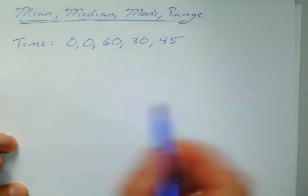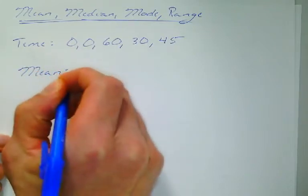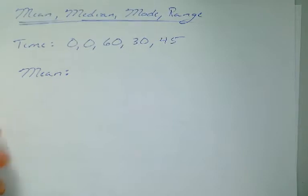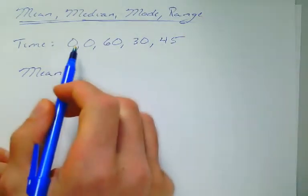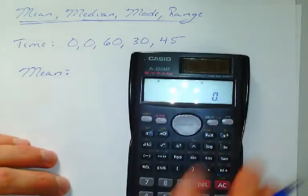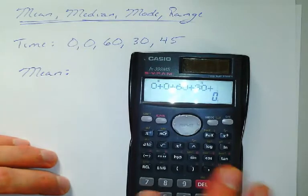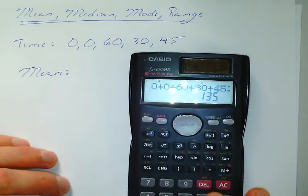Alright, so first thing we're going to talk about, let's do mean. So, mean. All mean is, is the average. Alright, so we add up all of our values together, and we divide by the number of terms. So, if we add all of these together, we've got zero, plus zero, plus 60, plus 30, plus 45. So, my total sum is 135.